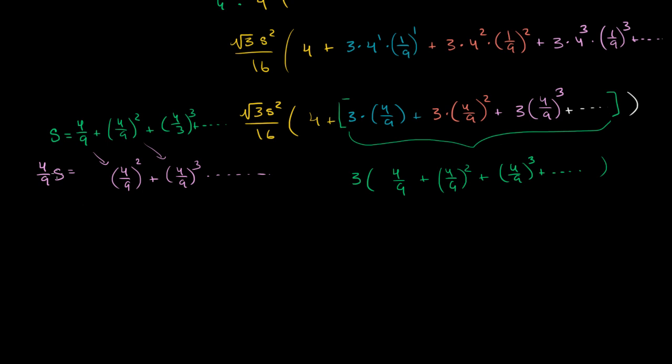This is kind of the magic of how we can actually find the sum of an infinite geometric series: we can subtract this term right over here. We can subtract this pink line from this green line. So if we do that, we can subtract the pink from the green.